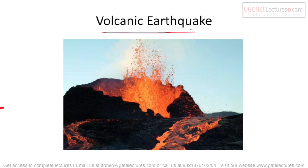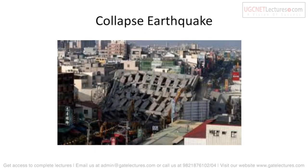The second type is volcanic earthquake, which mainly occurs in places where there are chances of volcanic eruptions, causing the eruptions to happen. The third type is collapse earthquake. These are comparatively very small-scale earthquakes compared to tectonic and volcanic ones. They mainly occur in areas where mining is done, where the earth becomes imbalanced and weak due to mining, causing a small-level earthquake.